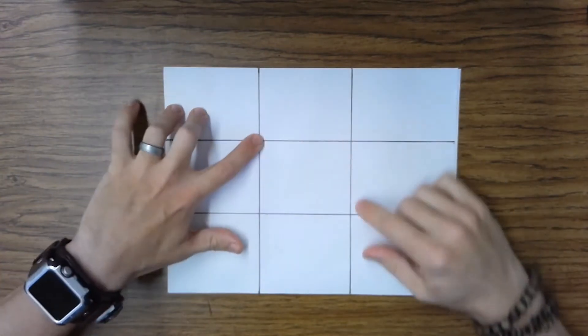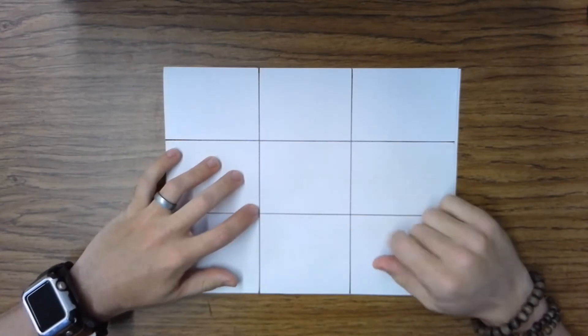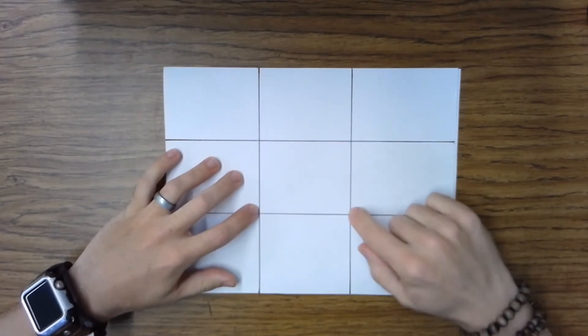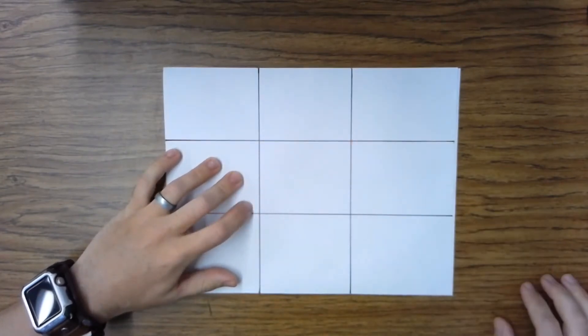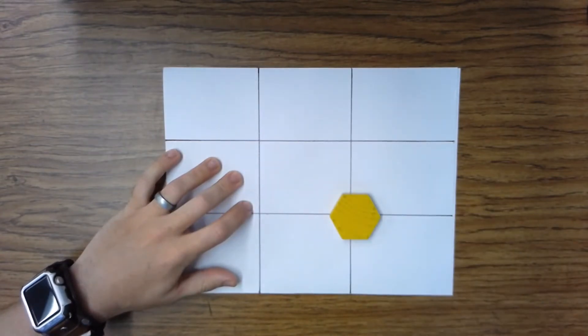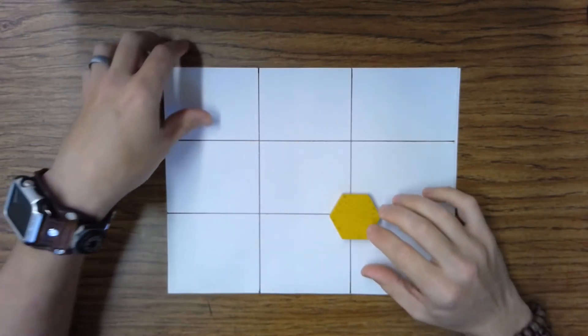Where these lines intersect are the best places to put your emphasis. So we're just going to pick one of these four spots and we're going to put whatever we're using to trace with. So I'm going to stick mine probably right there.